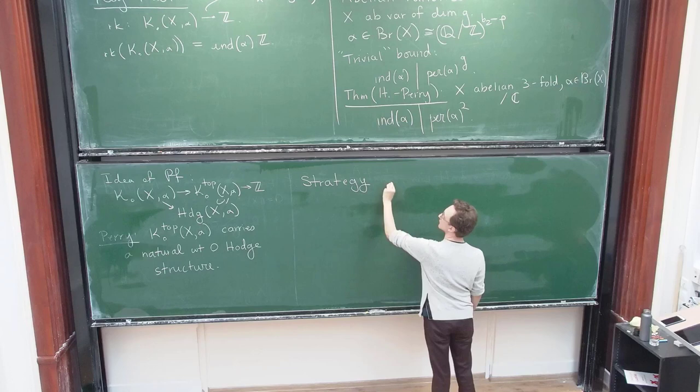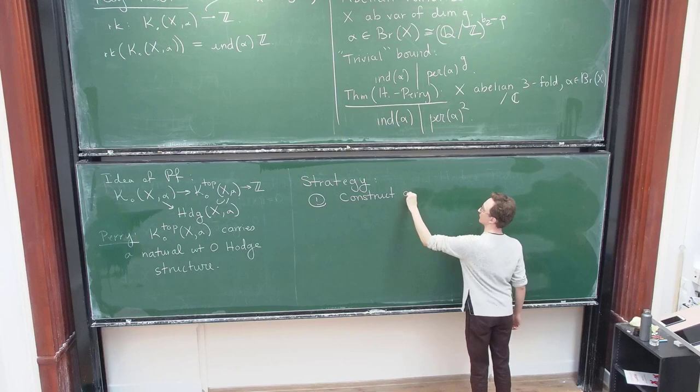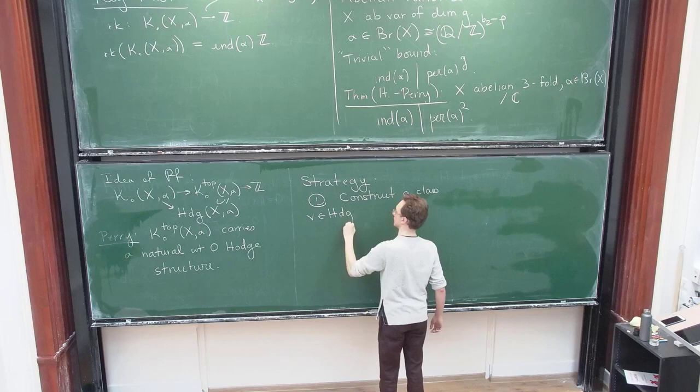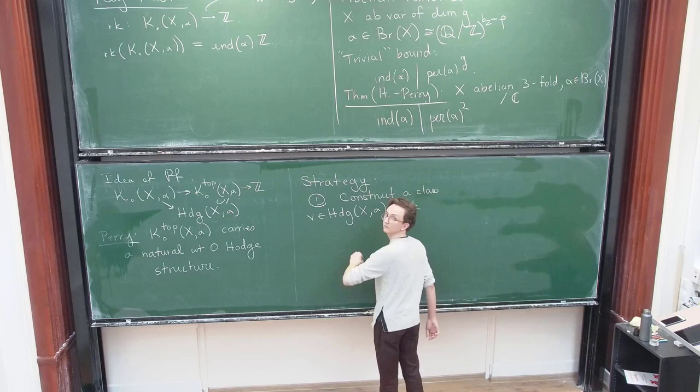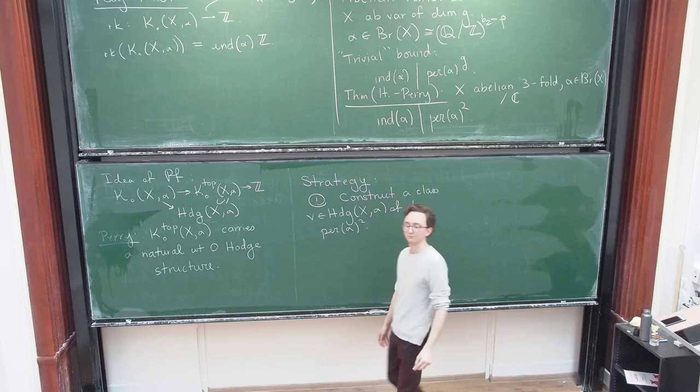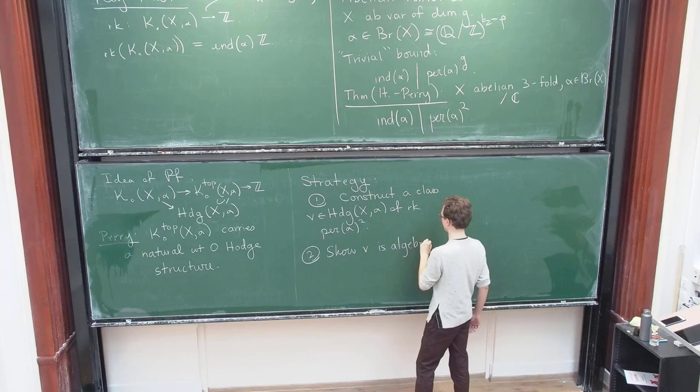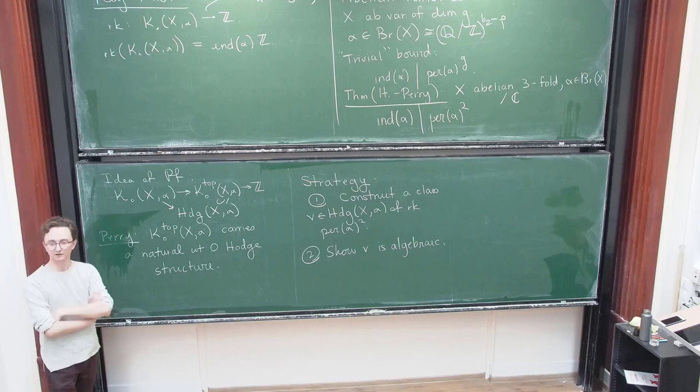So the strategy is to basically prove the integral Hodge conjecture for this category in the following sense. So the strategy is, first of all, you're going to construct a class V in here. And I'll say a little bit about how this is done, but I don't want to run out of time. A class whose rank is the thing that is desired, which is period squared. So this will require you to compute this Hodge structure. And the second step, which is the tricky step, is to show that this class is algebraic. Right? It's a Hodge class, and you're trying to show that it comes from a class in algebraic K-theory.